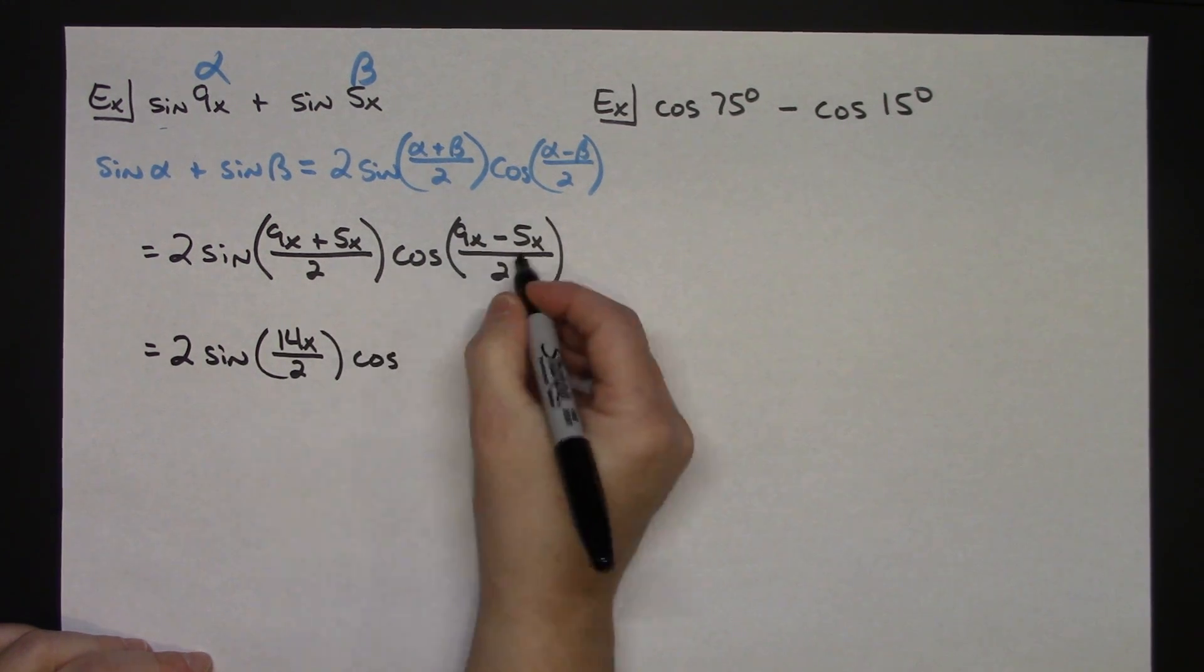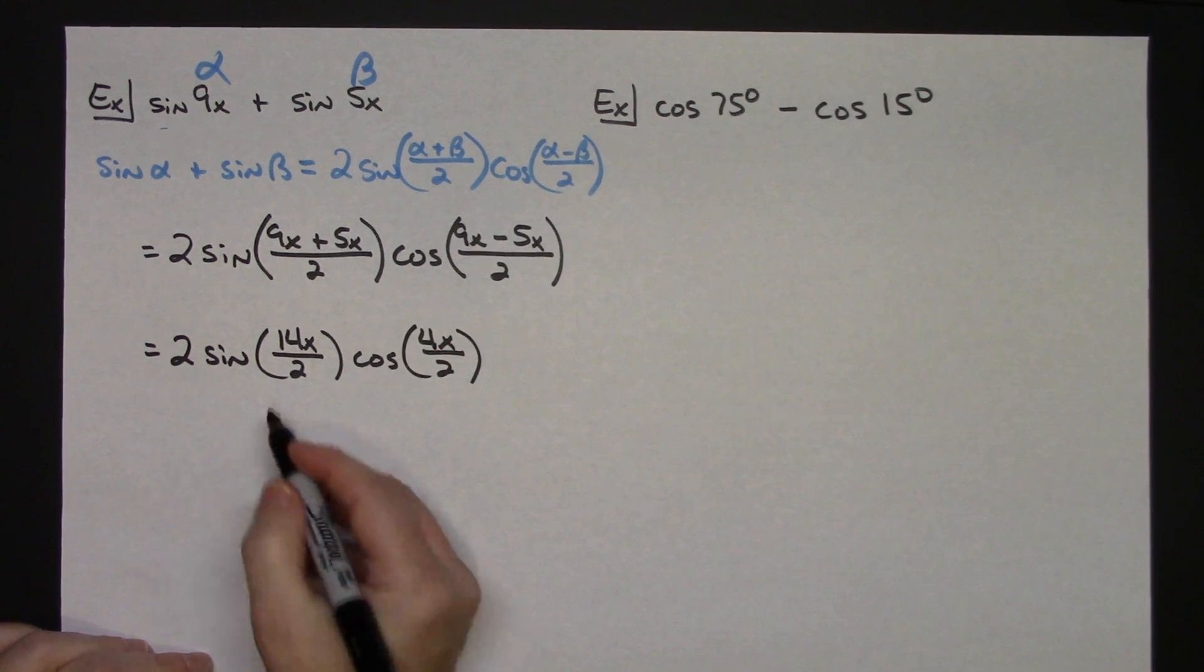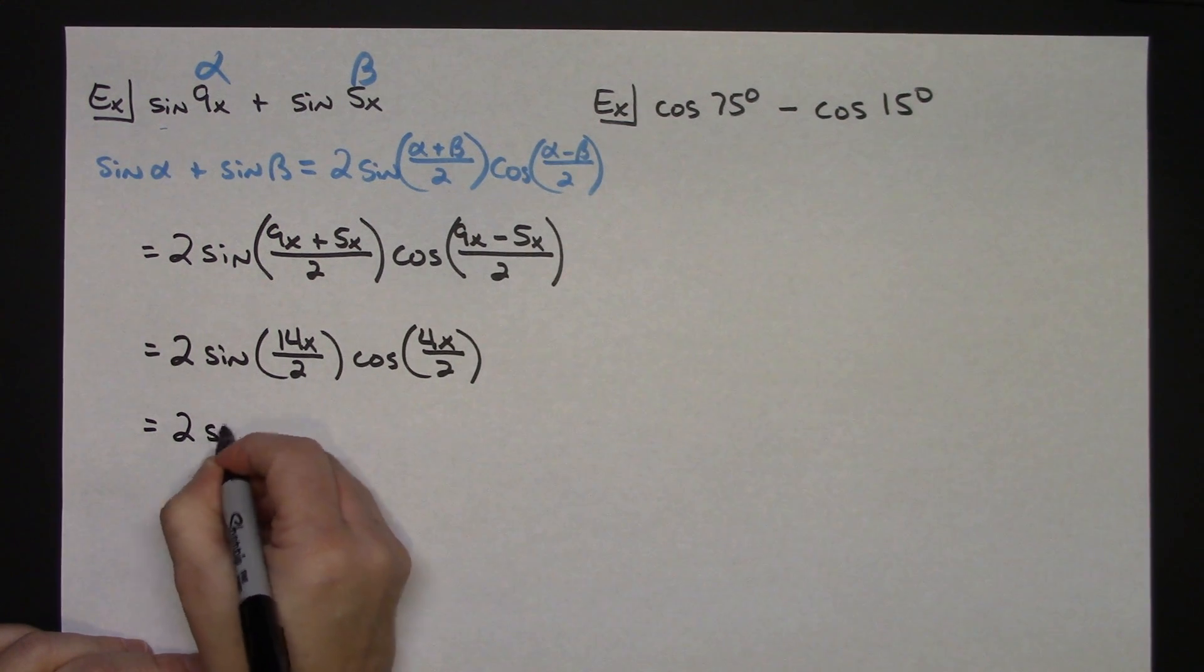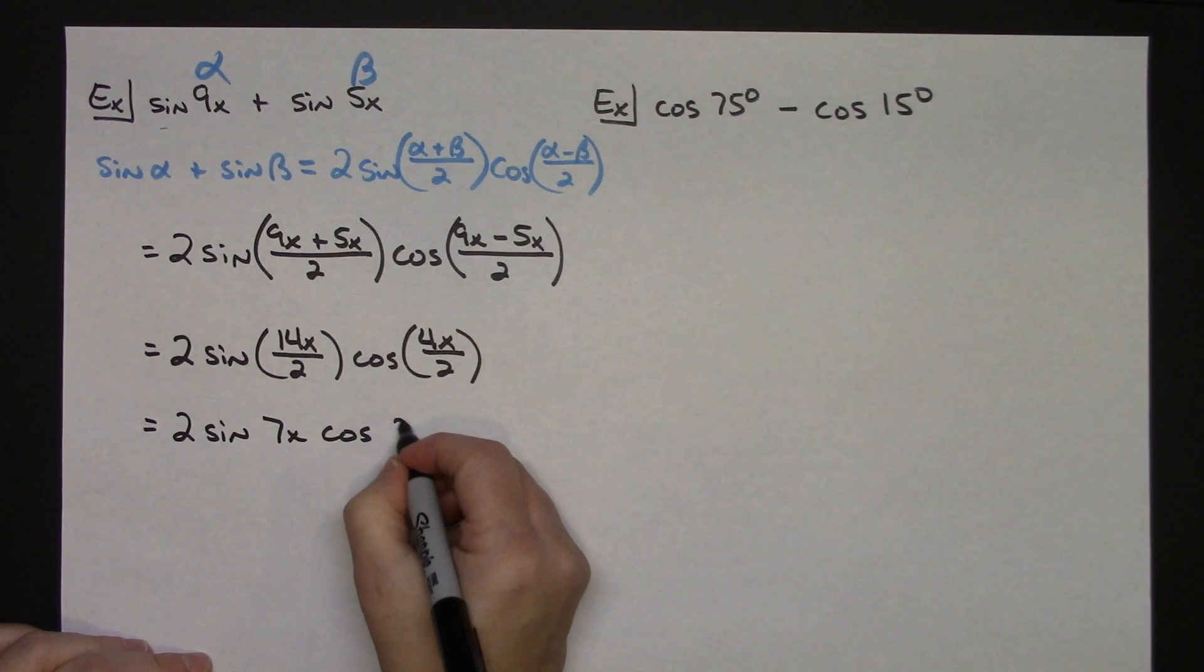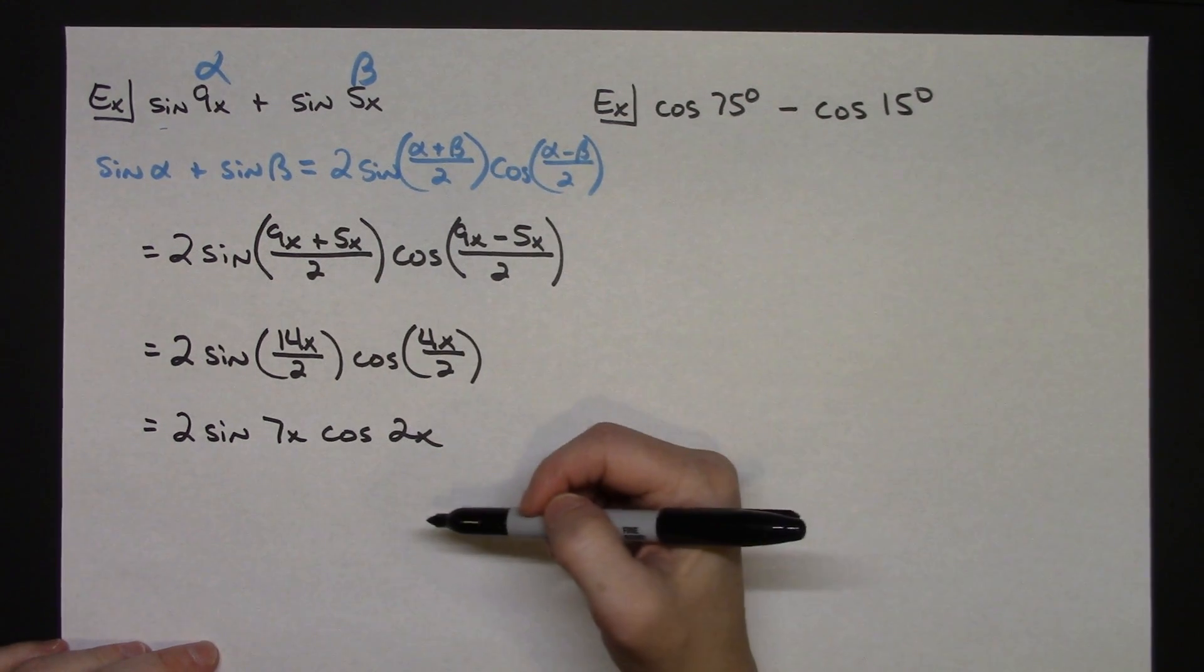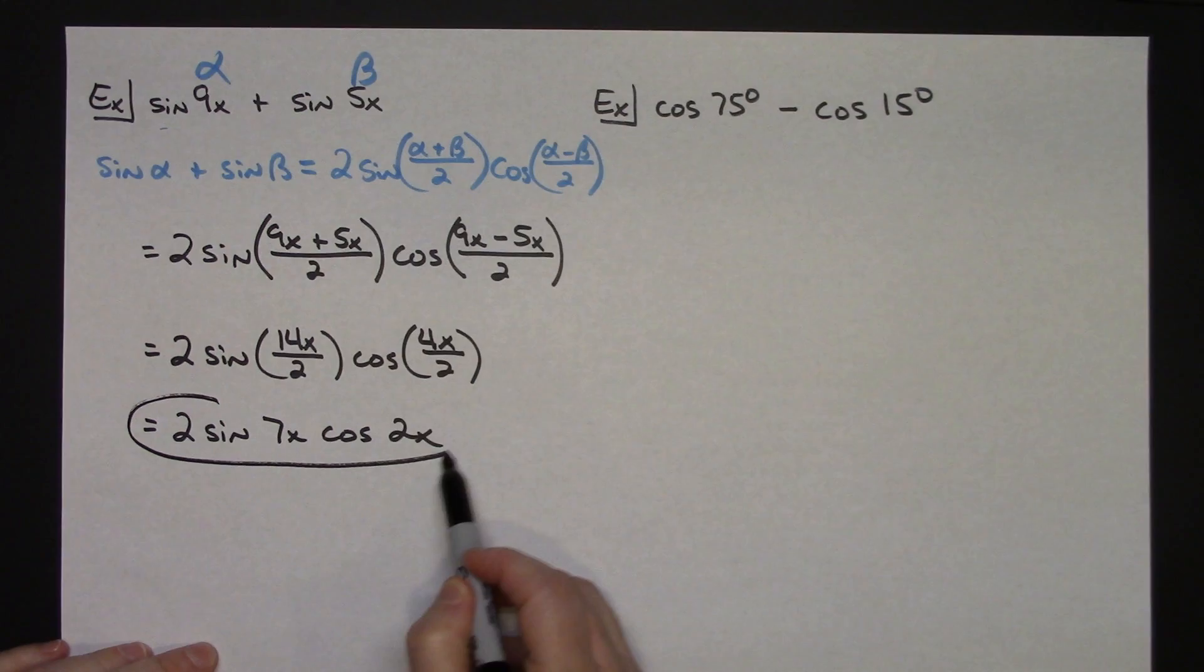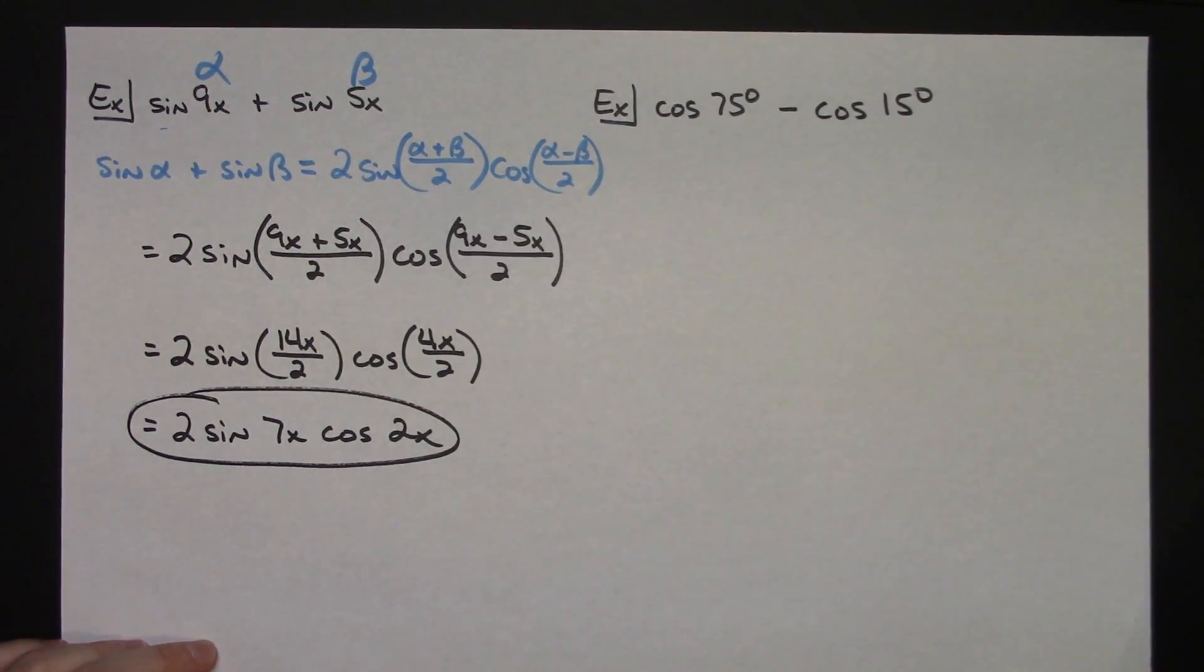If I add those two I'm going to have 14x divided by two. Cosine, if I subtract those two I'll have 4x over 2. We can go a little bit farther, I can simplify inside. Two sine of 7x cosine 2x. I don't know the value of x. This is just a basic direct substitution, turning that sum into a product. Probably one of the very first things that you would do when introduced to these formulas.